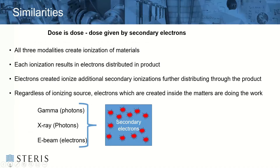The phrase 'dose is dose' is something the industry uses all the time, and the reason is that the amount of kilograys needed to kill the bioburden on your product is the same whether you're doing gamma, x-ray, or e-beam. All three modalities create ionization in your material — that's their mode of action. Each ionization, once it hits a product, causes the atoms to also get ionized and send out other electrons. Think of it like billiard balls: when you hit one, they all spread out. With many, many collisions coming in, you get the distribution you need to make sure your entire product load is getting sterilized.